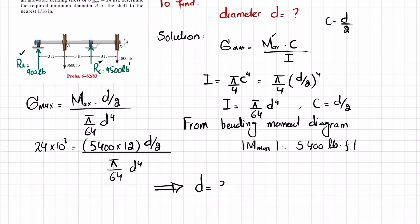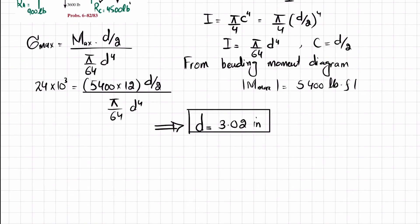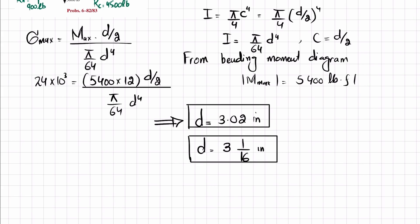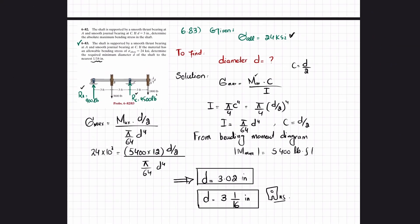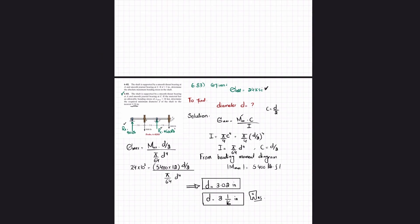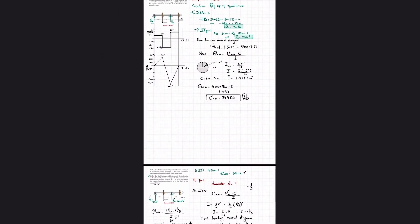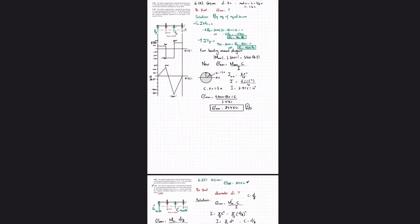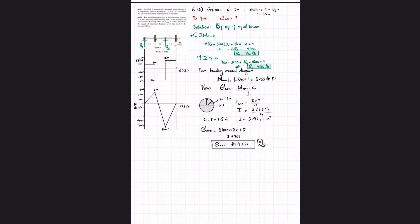Solving this equation gives d = 3.02 inches. Since we need to find the nearest 1/16-inch increment, and 3-1/16 inch is just above 3.02, the required minimum diameter is d = 3 and 1/16 inches. Problems 6-82 and 6-83 are related, which is why the shear force and bending moment diagrams were not repeated for the second problem.